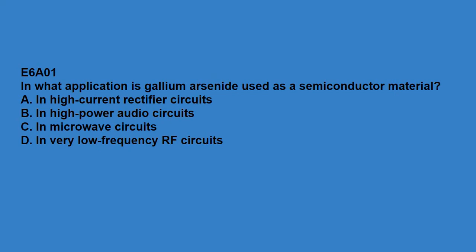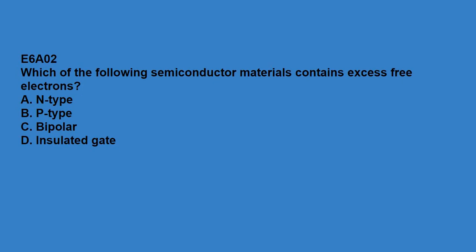First question, E6A01: in what application is gallium arsenide used as a semiconductor material? In microwave circuits. E6A02: which of the following semiconductor materials contains excess free electrons? N-type.